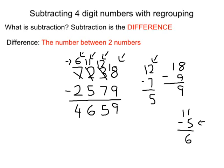Now we can check it. In order to check it, all we have to do is add our answer to the number right above. So now to check, we can go 4,659. And then we can add 2,579.